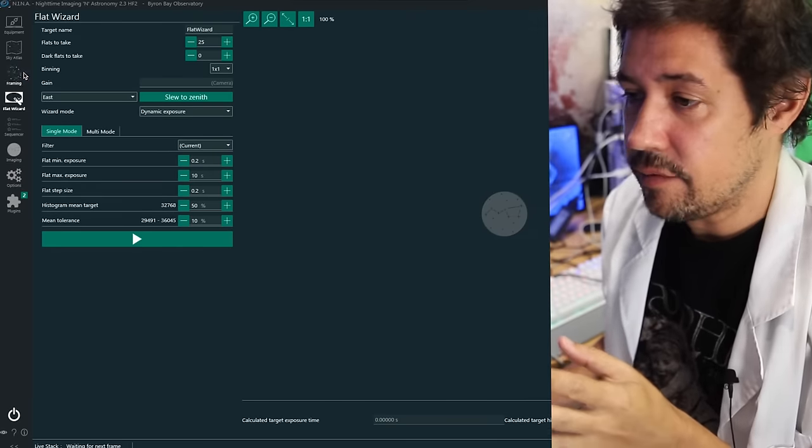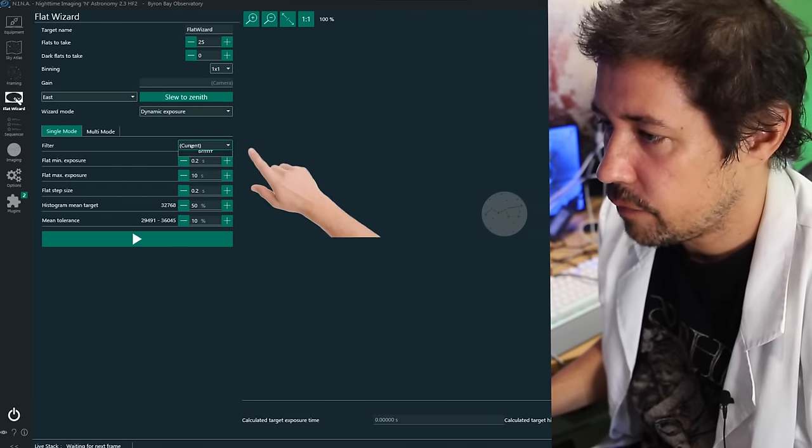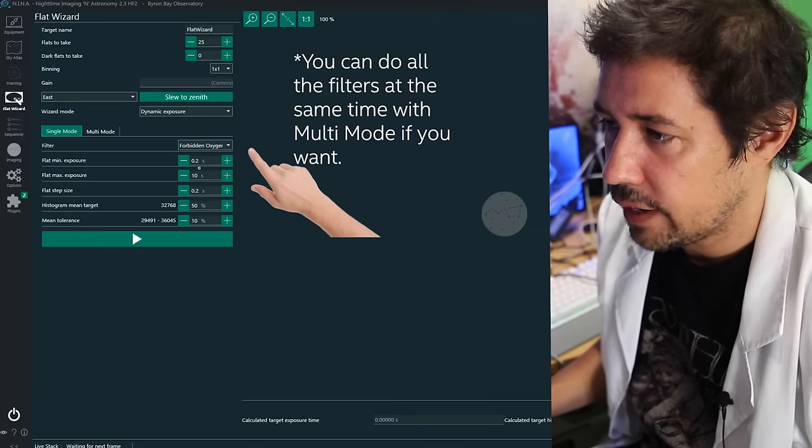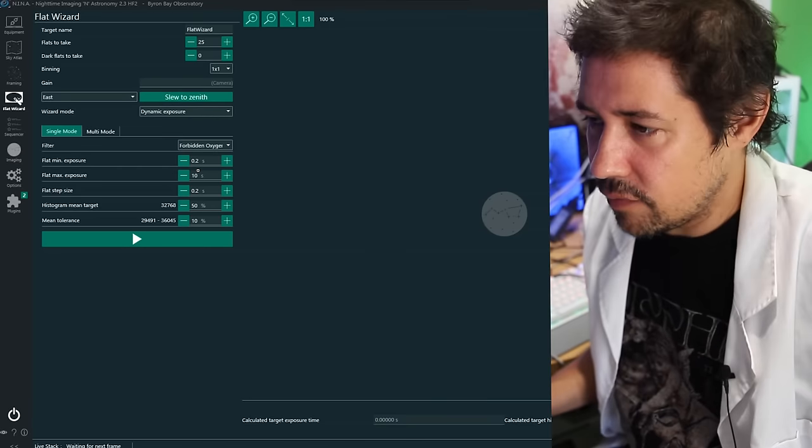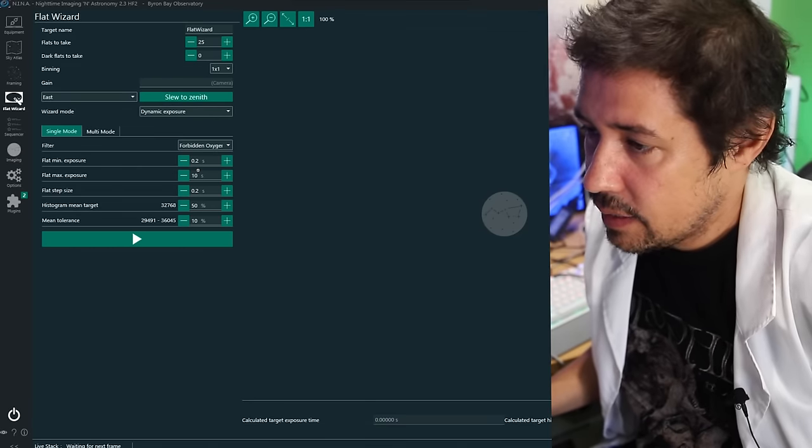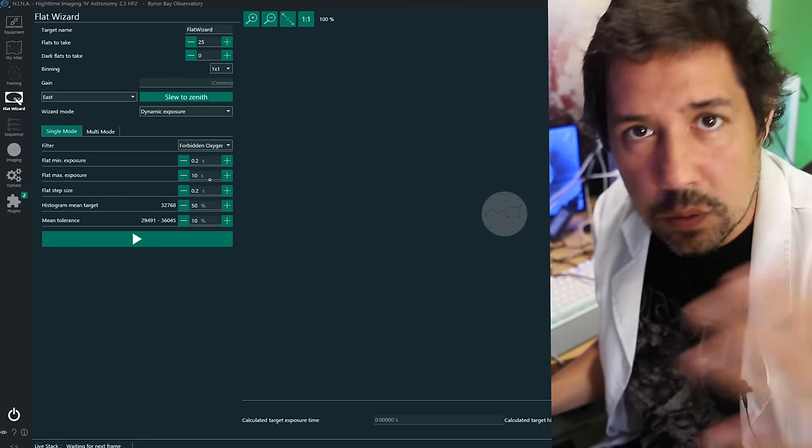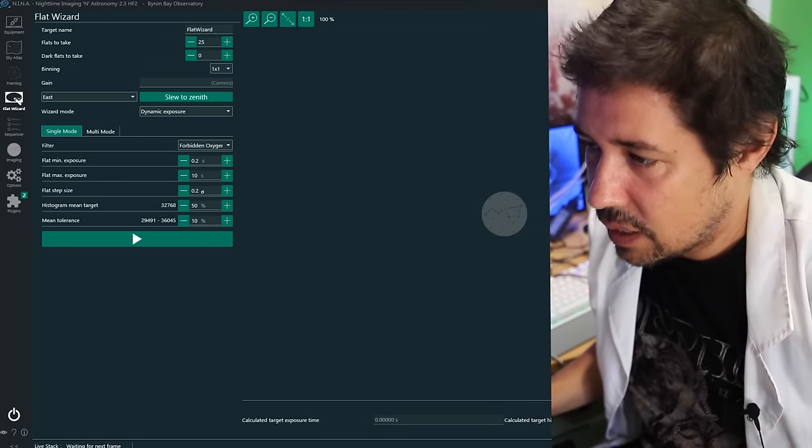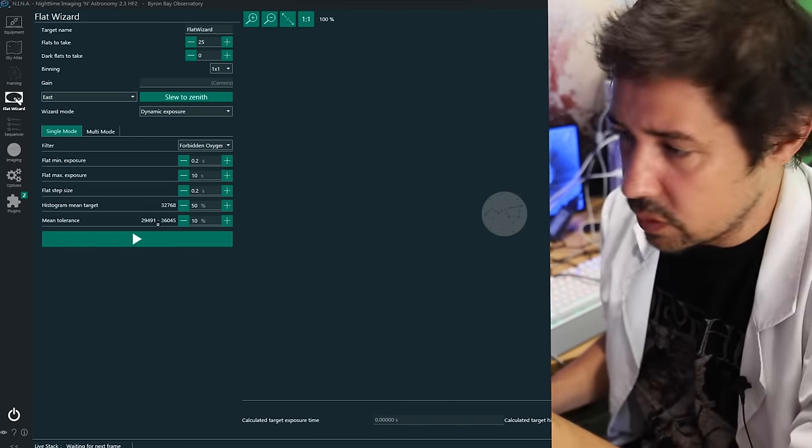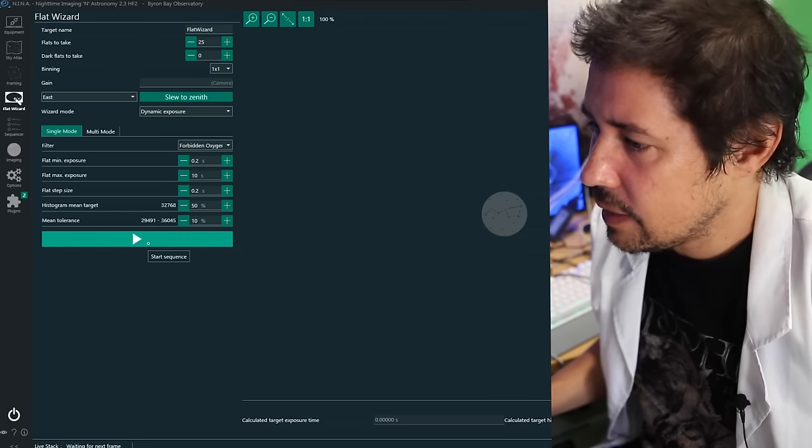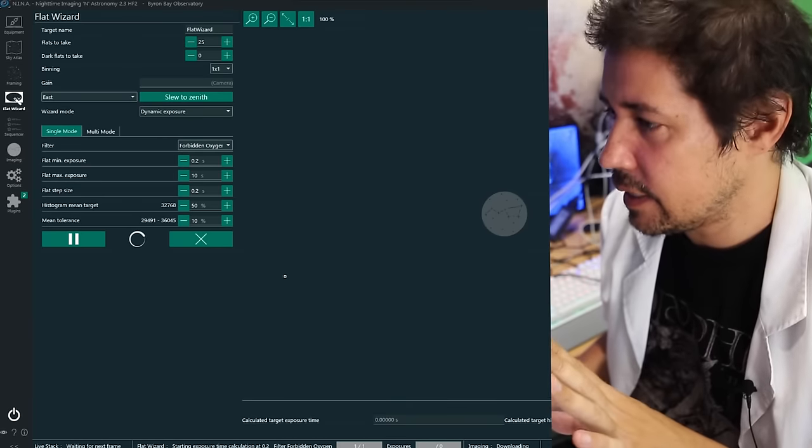Okay, I'm in Nina in the flat wizard. So I'm just going to click on flat wizard here, and I'm going to change my filter to oxygen because that's the flat I want. I have the observatory ready to go. I just opened the door so there's a little bit of light in there. And it has the min exposure, the maximum exposure, 10 seconds. And it will figure out what's the best exposure to do. It's got step size, the histogram, leave everything else default. Nina knows what it's doing. So I'm just going to click play here and it's going to start taking some test exposures to see exactly how much light is in there.